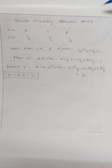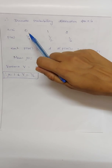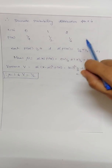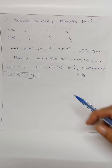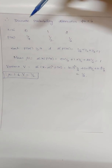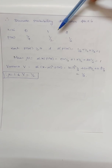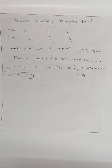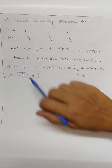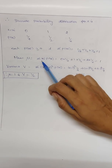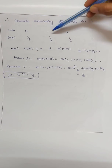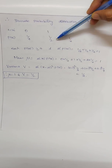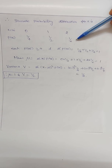The discrete probability distribution for X shows: X = 0 with probability 1/4, X = 1 with probability 1/2, and X = 2 with probability 1/4. Each value is ≥ 0 and they sum to one. The mean formula is: μ = Σ x_i · P(x_i) = 0·(1/4) + 1·(1/2) + 2·(1/4), giving the mean.